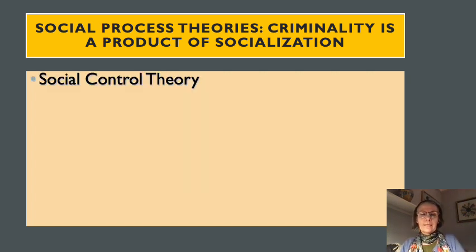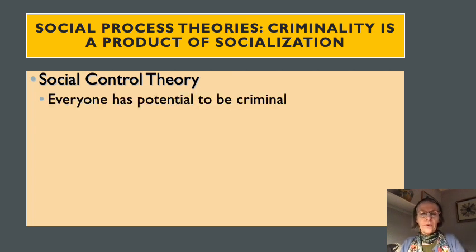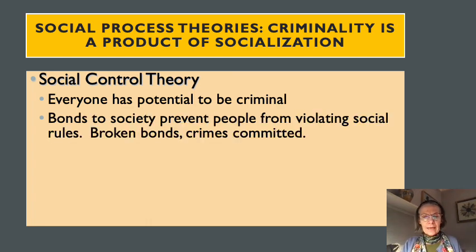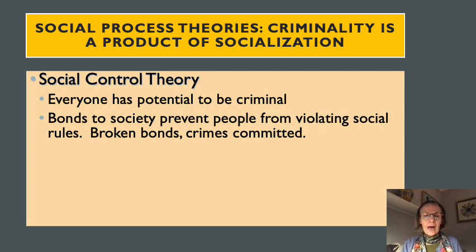Social control theory is another social process theory. It argues that everyone has the potential to engage in criminal behavior — we are not pre-ordained to act a certain way. Our behavior is linked to the bonds we have within society. When we maintain strong bonds with people and institutions in society, those bonds prevent us from violating social rules — that is, committing crimes. When those bonds break, social rules are more easily broken and crimes can be committed.